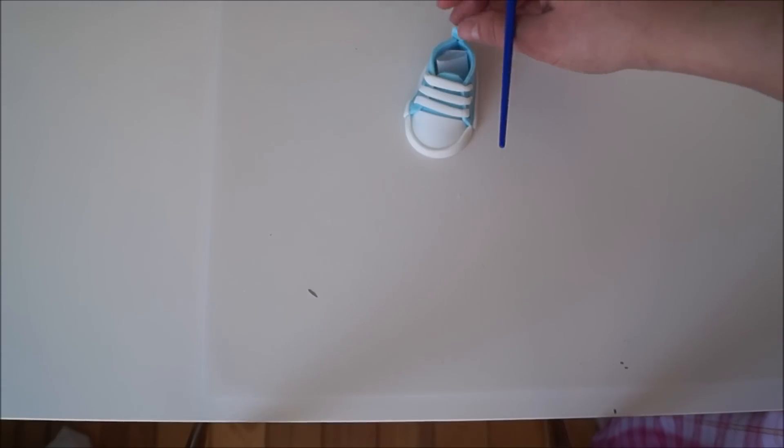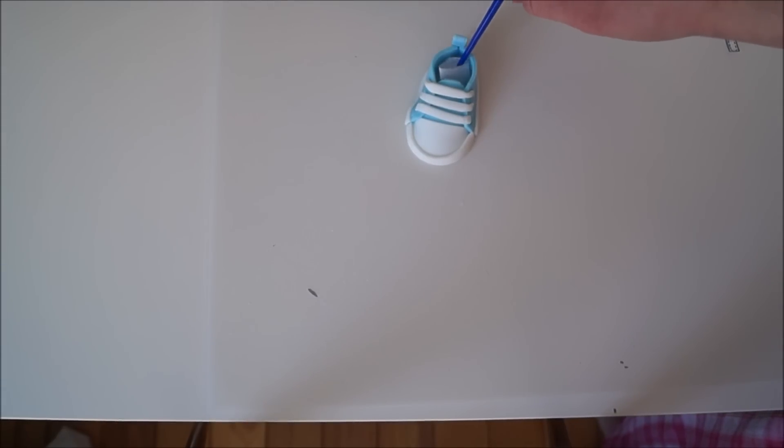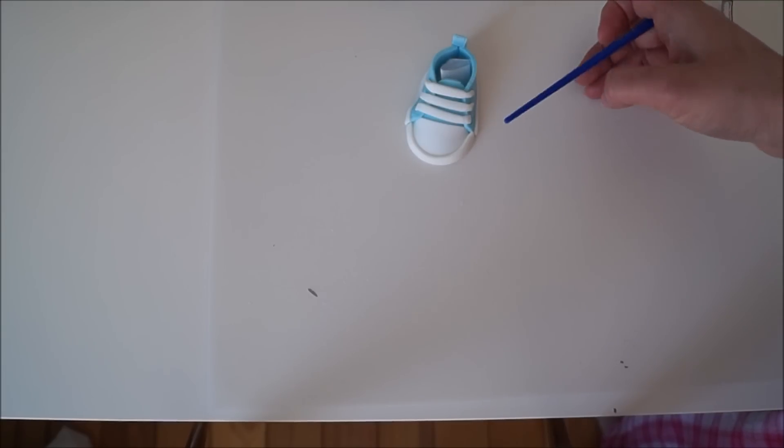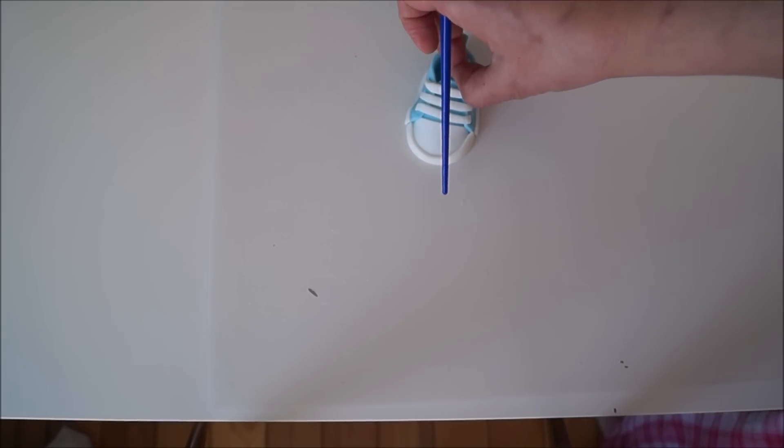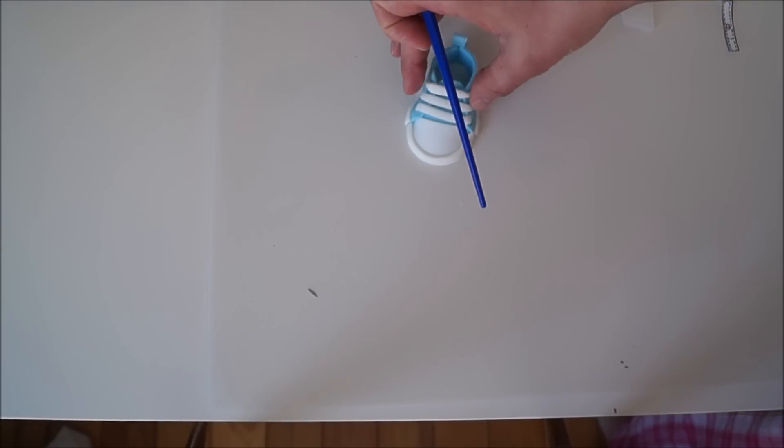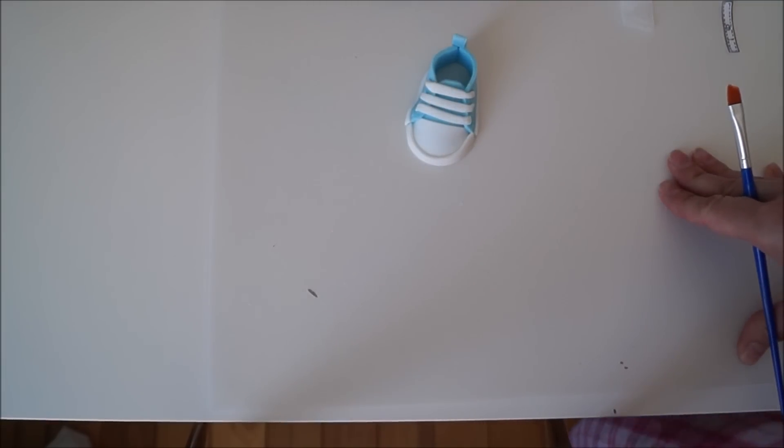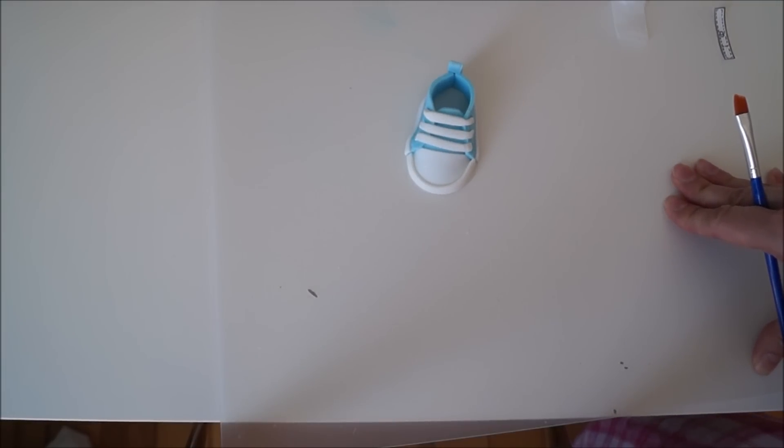Once you've created all your shoe, you can leave the paper inside until it's really dry if your shoe needs help to be molded. If not, and it's standing really nice on its own, just take it out and leave it to dry and harden for at least 24 hours. And there you go, this is how we do the converse shoe. Hope you enjoyed the video.